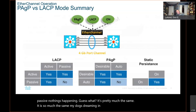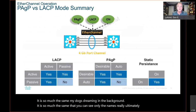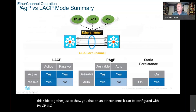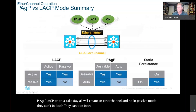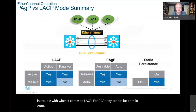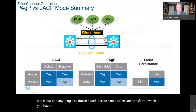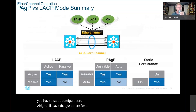The LACP and PAGP tables are very similar — really only the names change. An EtherChannel can be configured with PAGP, LACP, or On — they will all create an EtherChannel. In passive mode, both sides cannot be passive. That's what you get in trouble with for LACP. For PAGP, both sides cannot be in Auto. On and On also works, but On and anything else doesn't work because no packets are transferred when you have a static configuration.